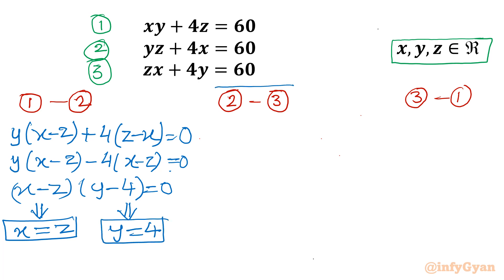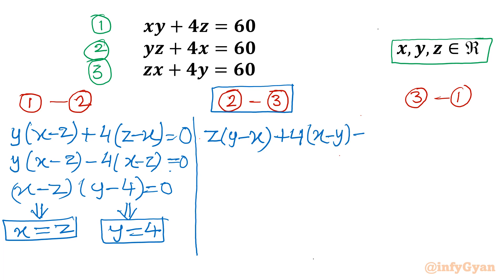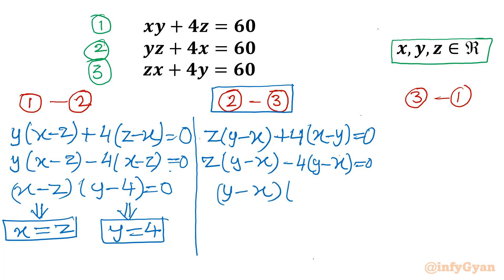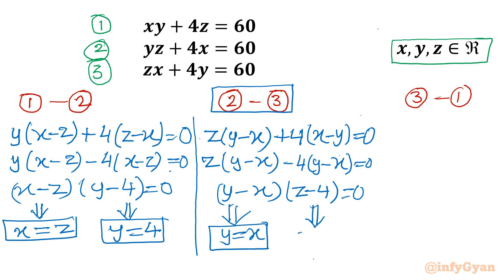Now for equation 2 minus equation 3: I write z common times y minus x, plus 4 common times x minus y, equals 0. Factoring out y minus x overall common gives: y minus x times z minus 4 equals 0. Conclusion: either y equals x, or from the second bracket z equals 4.